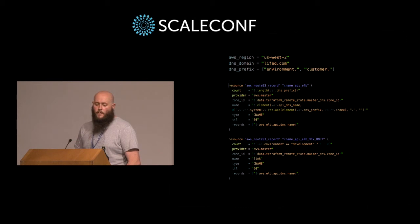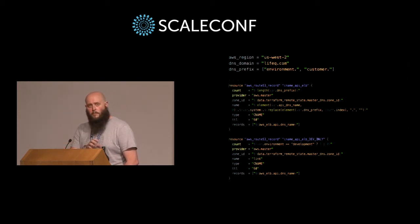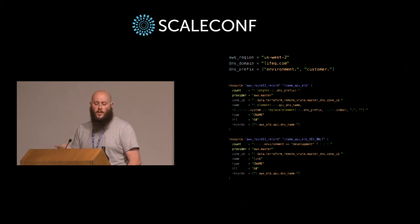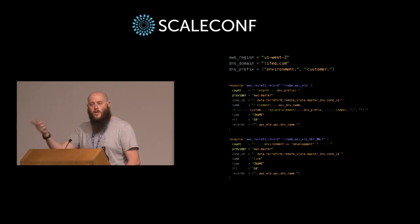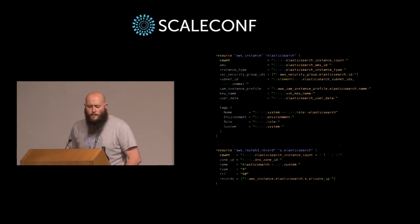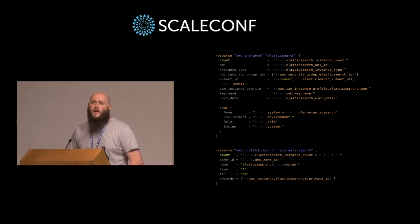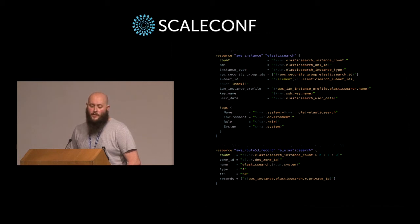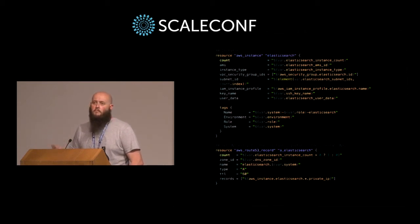For internal DNS, we've got an Elasticsearch cluster where we specify the number of instances we want rather than using an auto scaling group — purely so we can use Terraform's count to define the number of Elasticsearch instances with a variable. As soon as a new node comes up, it gets added to the internal DNS round-robin, and you can start hitting it again. This is kind of where the whole infrastructure-as-code concept comes from.